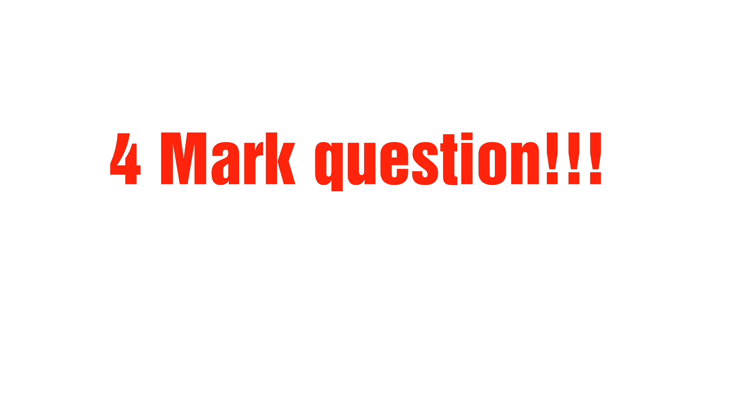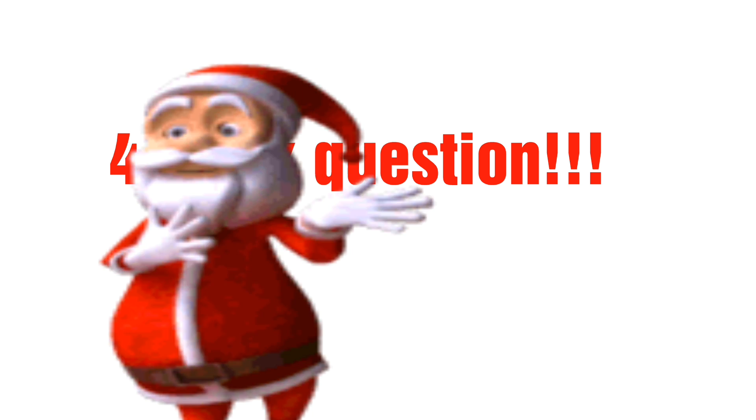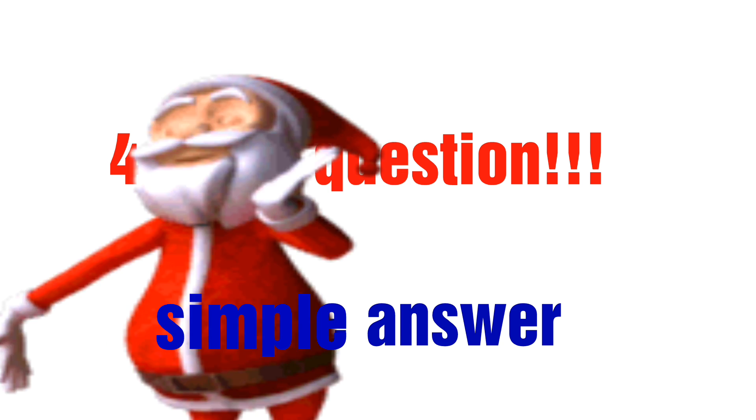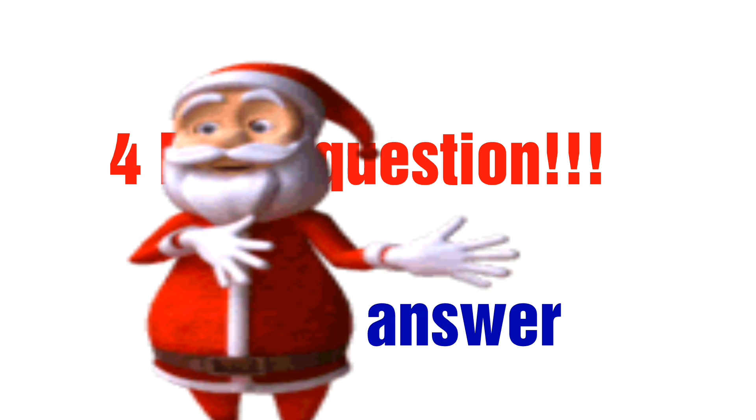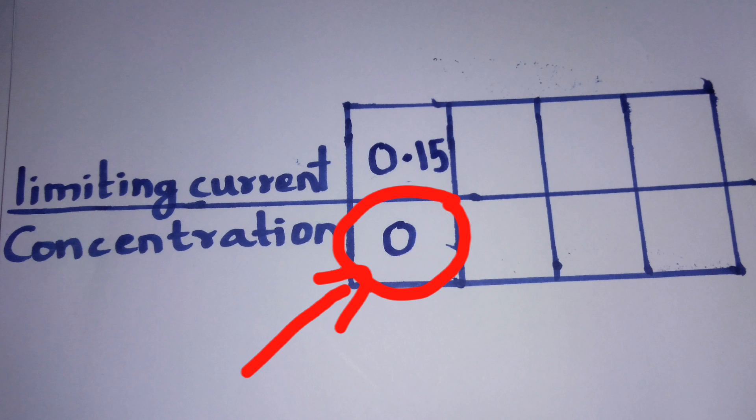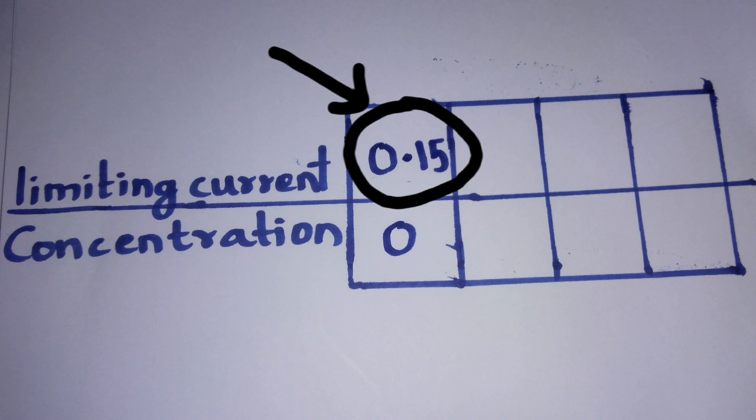It was a four mark question and the answer was so simple. When the concentration of Pb²⁺ was 0, the limiting current was 0.15.